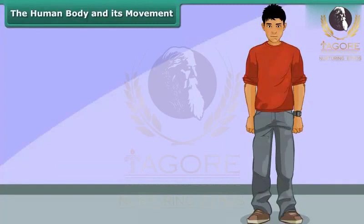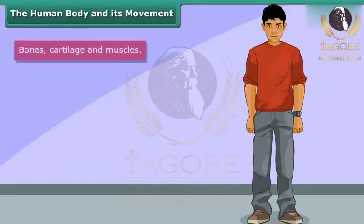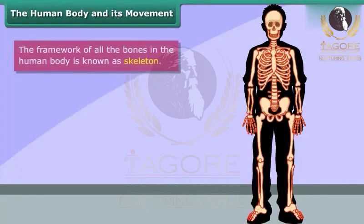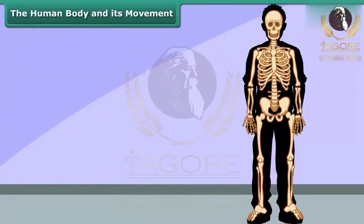As we already know, the shape of our body is due to the presence of bones, cartilage and muscles. There are 206 bones in the human body. The framework of all the bones in the human body is known as the skeleton. It consists of the skull, hand bone, shoulder bone, rib cage, pelvic bone, and backbone.